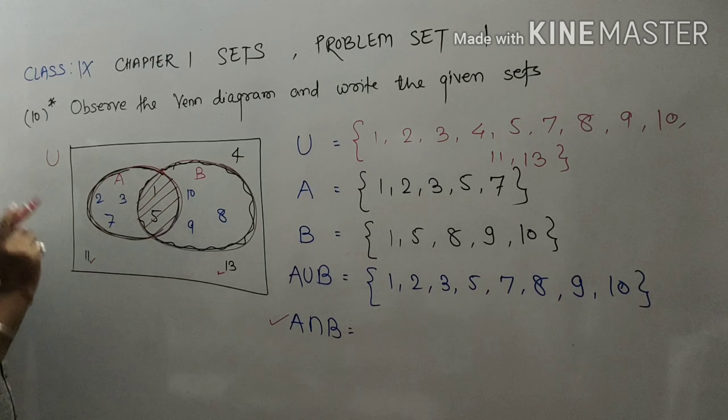So this 1 and 5 is A intersection B. So write 1, 5. Yes friends, this is the answer of A intersection B: 1, 5. So next question we will discuss in next video. Have a nice day.